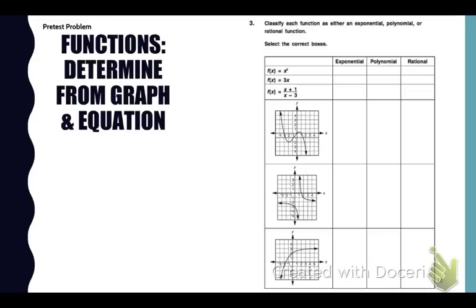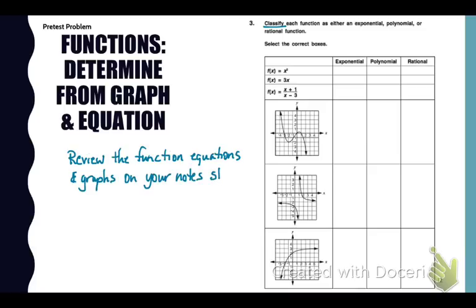Go back to your pretest and look at number three. We need to classify each function as either exponential, polynomial, or rational. Now keep your eyes on your review packet. I want you to review the functions that are given in that table and the equations. Familiarize yourself with the name of the function, their equations, and the graphs. And these are in parent forms. On the test you may not be given the parent function, the most basic, but you can look at the variation of it.